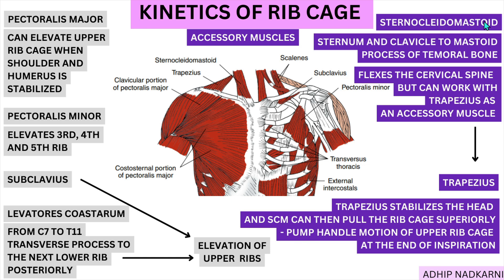Starting with the sternocleidomastoid — the muscle starts from the sternum and the clavicle and goes all the way up and attaches to the mastoid process of your temporal bone. Because its attachment is on the front of the cervical spine, contraction of that muscle will create flexion at the cervical spine. But it can also work as an accessory muscle with the help of trapezius.